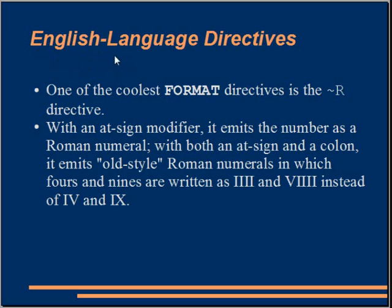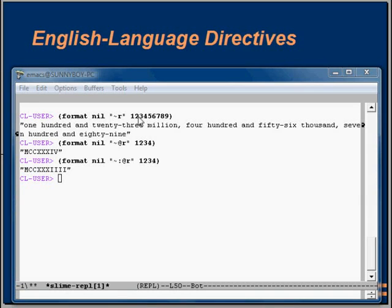Lisp also provides English language directives. One of the coolest format directives is the tilde R directive. In the first format function I used tilde R with input variables 1 to 9 and I get the output in English. In the second format function I used tilde R with the at-sign prefix and I get the output in Roman numeral format. In the third example I used tilde R with both at-sign and colon and I get the output in old Roman numeral style.